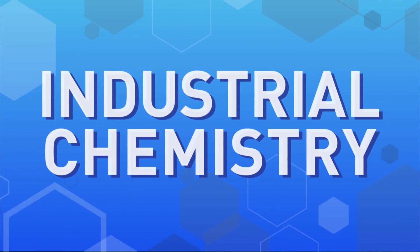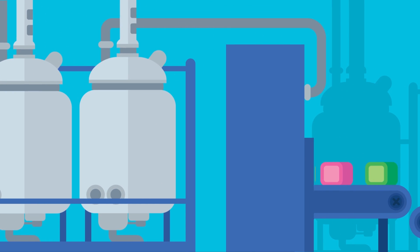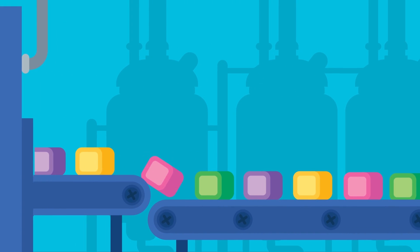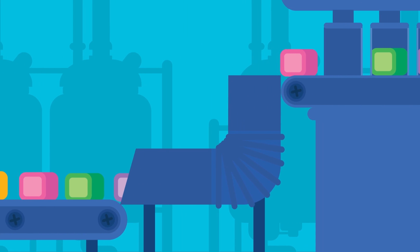Industrial chemistry is the branch of chemistry which applies chemical and physical processes towards the transformation of raw materials into products that are of benefit to humanity.